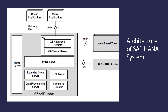An SAP HANA system consists of several servers, the most important of which is the index server. The index server contains the actual data stores and the engines for processing data. The name server owns information about the topology of SAP HANA systems. In a distributed system with instances of SAP HANA on multiple hosts, the name server knows where the components are running and which data is located on which server.